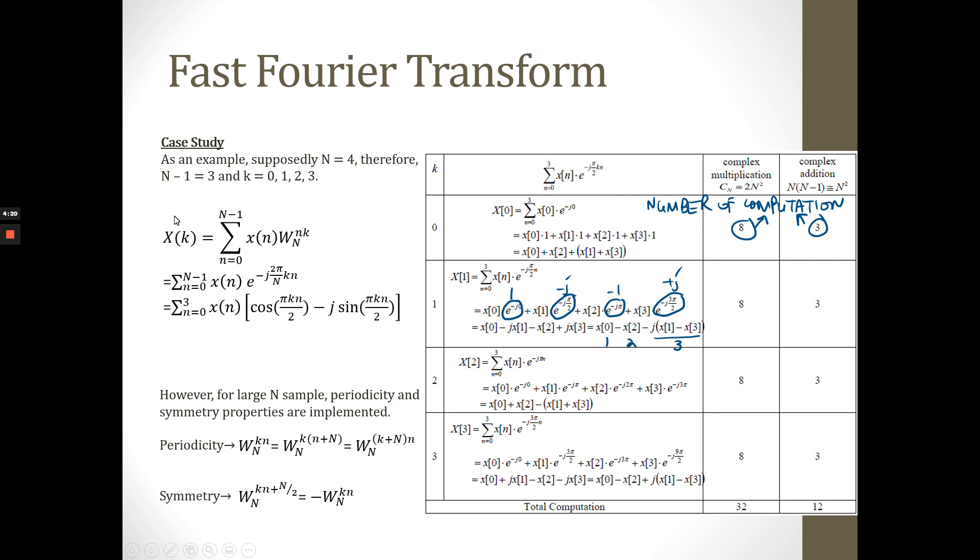However, the total number of computations for complex multiplication is 32 based on this formula for DFT, and for complex addition is equal to 12 for N equal to 4.